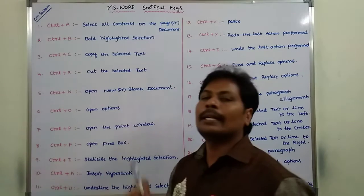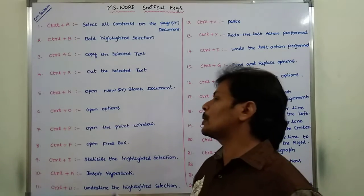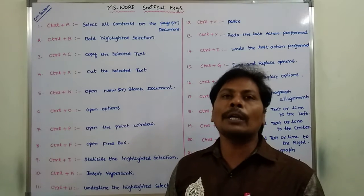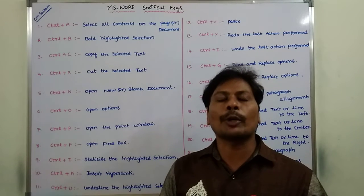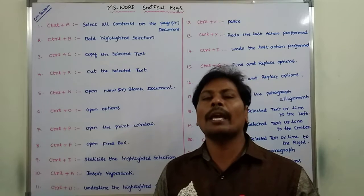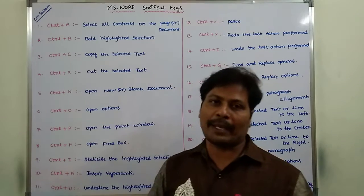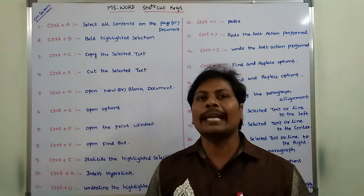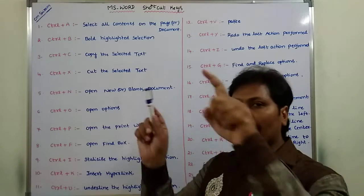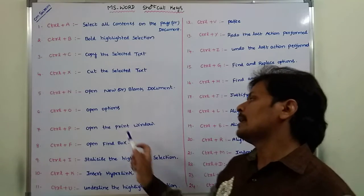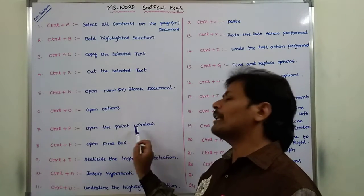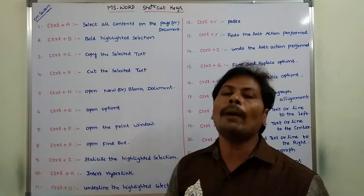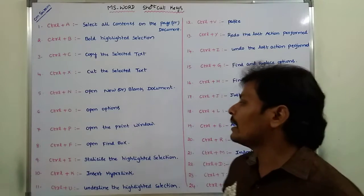Next is Ctrl plus P. This command or key is used to open the print window. Suppose we want to print a particular document or page — we use Ctrl plus P. Whenever we press Ctrl plus P, the print window opens, and on that print window we have to set the print options.